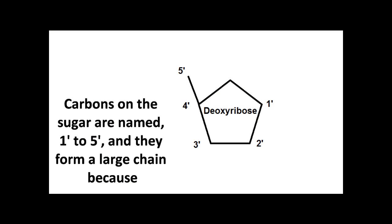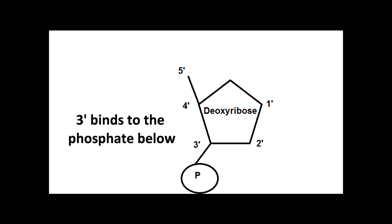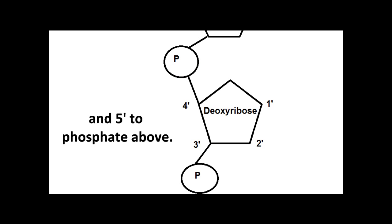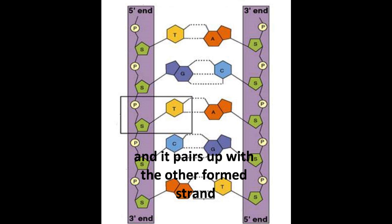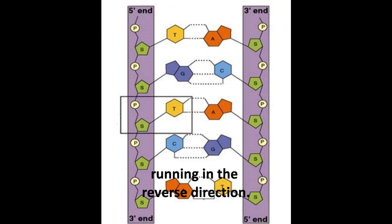Carbons on the sugar are named 1 prime to 5 prime. And they form a large chain. Because 3 prime binds to the phosphate below. And 5 prime to phosphate above. 1 prime to the nitrogenous base. And that's how one long DNA strand is made. And it pairs up with the other formed strand running in the reverse direction.